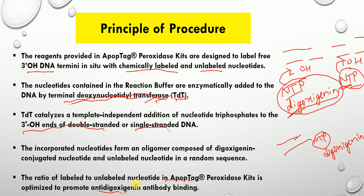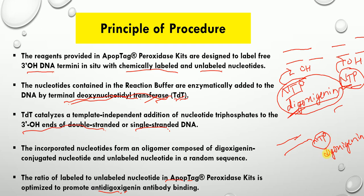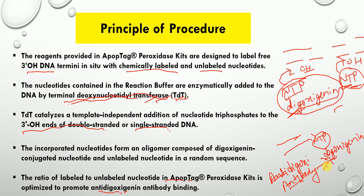DNA fragments which have been labeled with digoxigenin nucleotides are then allowed to bind to an anti-digoxigenin antibody. So we have digoxigenin at the fragmented DNA, and the anti-digoxigenin antibody binds to the digoxigenin. Both digoxigenin-labeled and unlabeled nucleotides have bound to the free 3' hydroxyl ends, and then this anti-digoxigenin antibody specifically binds to the digoxigenin.